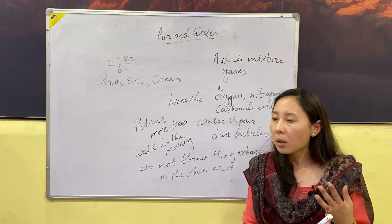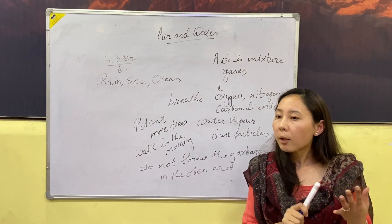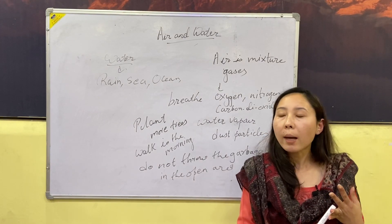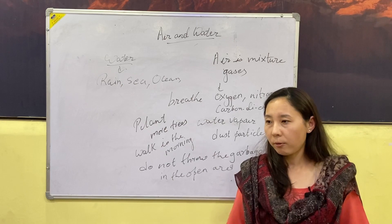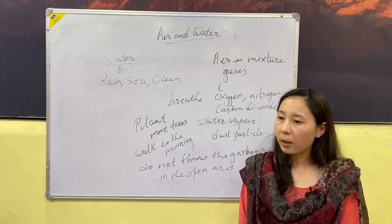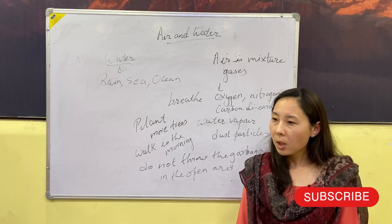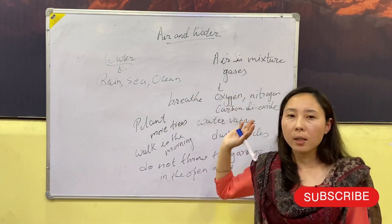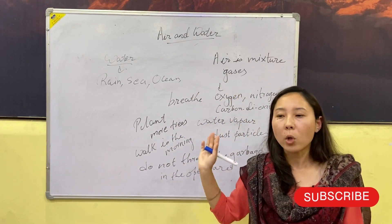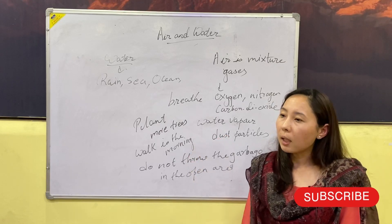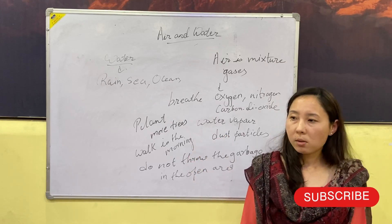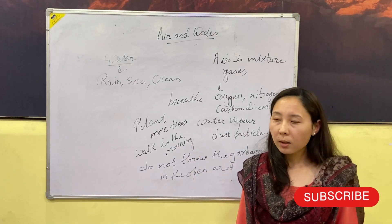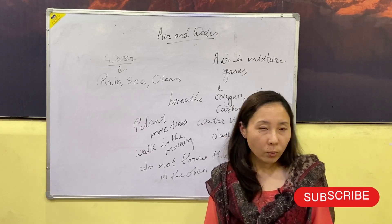So both air and water are very very important for living things. If there were no air and water, there would be no life on this earth. Understood? Thank you.